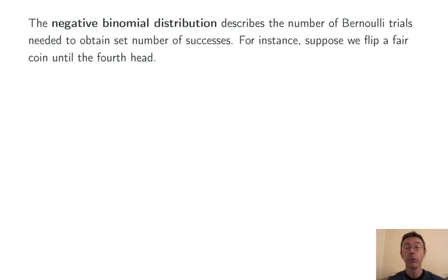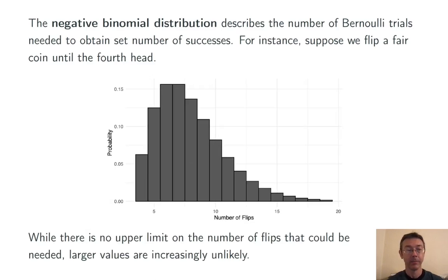For instance, suppose we flip a fair coin until we get four heads. There's no upper limit to the number of flips that might be necessary, but of course larger values are increasingly unlikely.